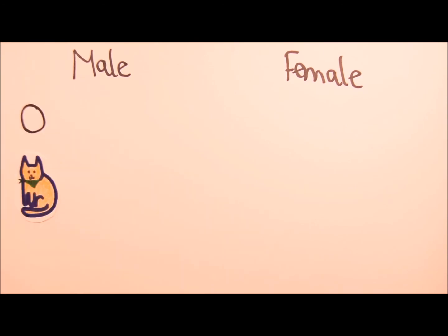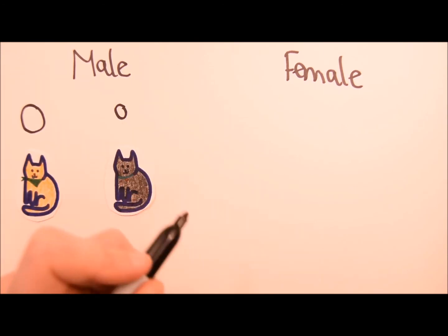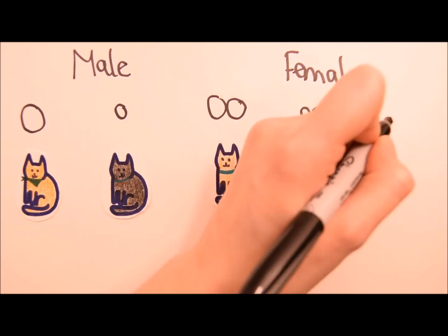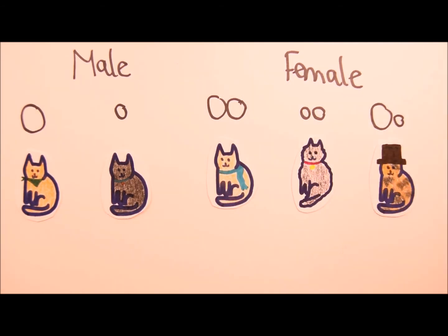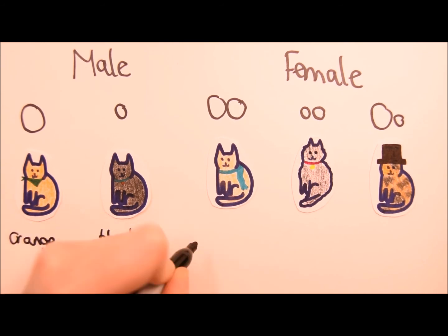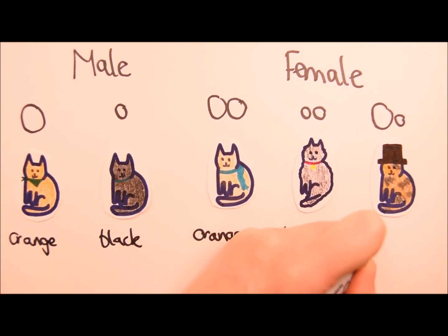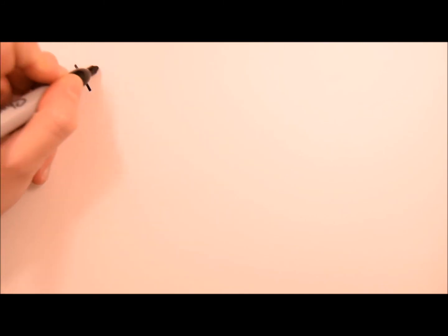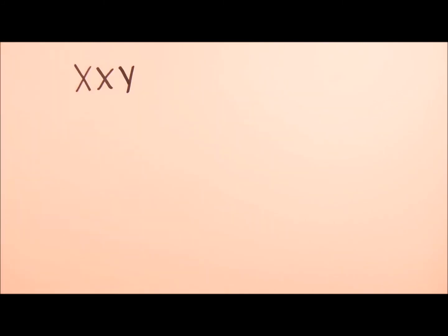Therefore, males will either have the genotype O and be orange, or o and be black. Female cats, on the other hand, can be homozygous dominant and be orange, homozygous recessive and be black, or heterozygous and be a mix of black and orange, also known as the tortoiseshell. This explains why pretty much all tortoiseshells are female.